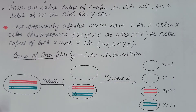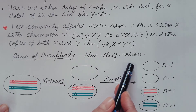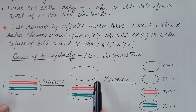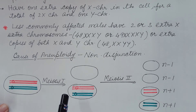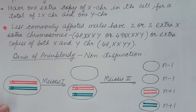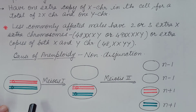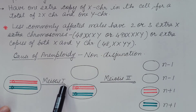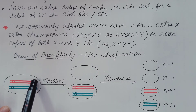Now let us see the cause of aneuploidy. It is non-disjunction — during gamete formation there is an error in the meiotic division. If there is an error in meiosis 1, the two homologous chromosomes fail to separate or disjoin. This is known as non-disjunction. Looking at the figure, during gamete formation from a diploid cell, meiosis 1 takes place, and if there is an error, homologous chromosomes fail to separate.